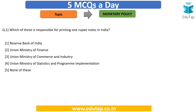Let's see the first question. The first question is: which of these is responsible for printing 1 rupee notes in India? See the options and pause the video. The correct answer is the Union Ministry of Finance.